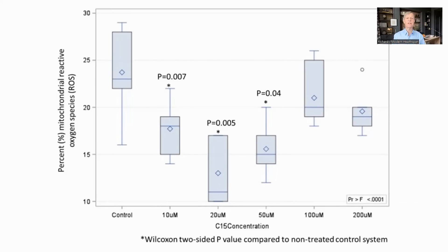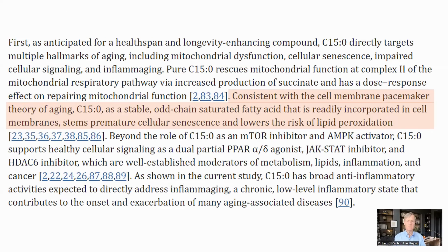This graph shows an in vitro experiment where increasing concentrations of C15 had a U-shaped impact on the reactive oxygen species produced by mitochondria. Lower ROS is a sign of healthier mitochondrial metabolism, and 20 micromolar was the most effective concentration. C15 is readily incorporated into cell membranes. Being a saturated fat, it increases membrane stiffness, reduces oxidative stress due to resistance to oxidation, and the authors point to this as reducing senescence.